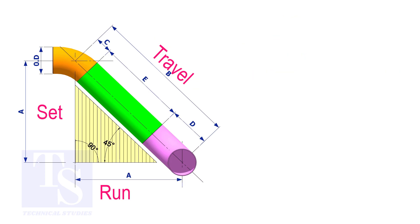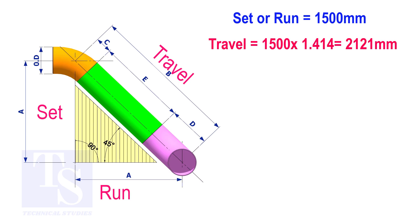Try another example. Suppose the value of the set or the run is 1,500 millimeters. The value of the travel will be 1,500 multiplied by 1.414, which equals 2,121 millimeters.